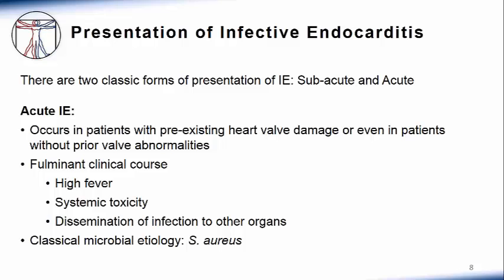Other microorganisms that can have an acute presentation include group A streptococci, strep pneumoniae, and Neisseria gonorrhoeae. It is important to note that some presentations of infective endocarditis can overlap between subacute and acute presentations.